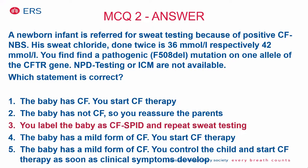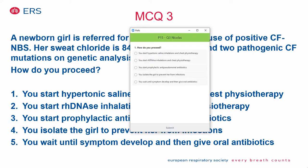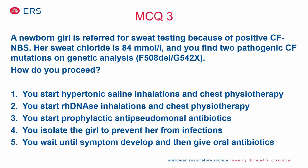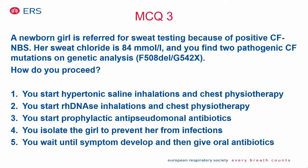Third MCQ: a newborn girl is referred for sweat testing because of positive CF newborn screening. Her sweat chloride is 84 mmol/L and you find two pathogenic CFTR mutations on genetic analysis. How will you proceed? You start hypertonic saline inhalations and chest physiotherapy; you start DNase inhalations and chest physiotherapy; you start prophylactic anti-Pseudomonas antibiotics; you isolate the girl to prevent infections; or you wait until symptoms develop. The vast majority answered correctly: you start hypertonic saline inhalations and chest physiotherapy as the first step of treatment.